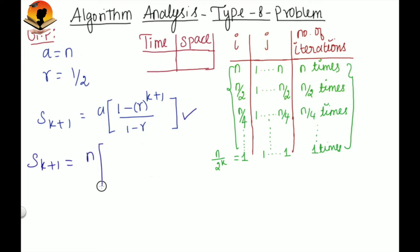Let us substitute these values here. Equal to n into 1 minus 1 by 2 to the power of k plus 1 divided by 1 minus 1 by 2. If you solve this, you will get 2n into 1 minus 1 by 2 power k plus 1.